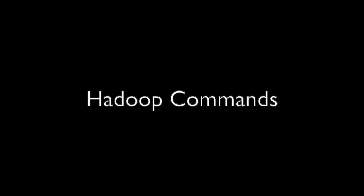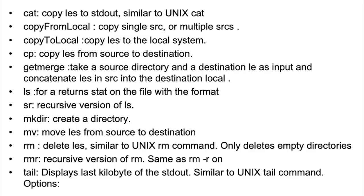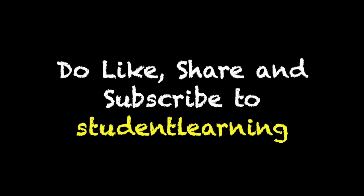Different Hadoop commands: all Hadoop commands are very similar to Linux and Unix commands. The first command is 'cat' — copy source to standard out, similar to the Unix command. Next, 'copyFromLocal' and 'copyToLocal'. The 'cp' command copies the source file to destination. 'getMerge' is used to merge two directories from one source to another and is a recursive function of 'ls'. 'mkdir' makes a directory. 'mv' moves files. 'rm' removes directories. 'tail' displays the last kilobytes of standard output. Thank you so much for watching — please leave your questions in the comment section below, and do like, share, and subscribe to Student Learning.